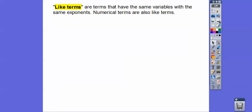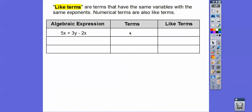Like terms are terms that have the same variables and the same exponents. And numbers are also like terms. Terms are separated by pluses and minus signs, so in the expression 5x plus 3y plus 2x, there are three terms: 5x, 3y, and 2x. The like terms are the ones that have the x's — the 5x and the 2x.